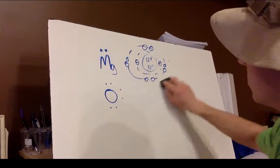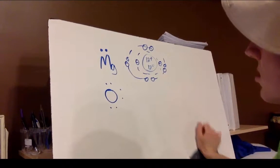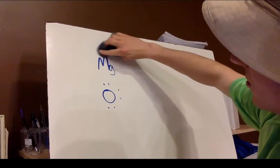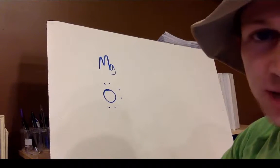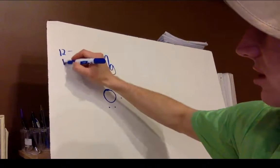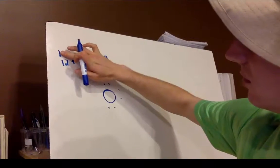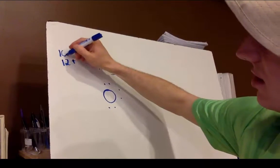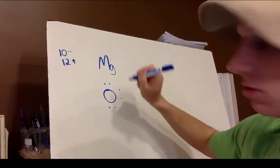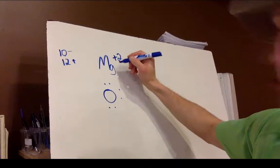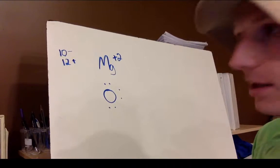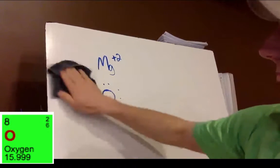Magnesium gets rid of its two valence electrons. On the Lewis dot structure we show they're gone. Now for the math: it initially had 12 electrons and 12 protons, but we got rid of two, so we only have 10 electrons. With 12 positive charges and 10 negative charges, the overall charge is plus two. So Mg²⁺ is the Lewis dot structure for the magnesium ion.